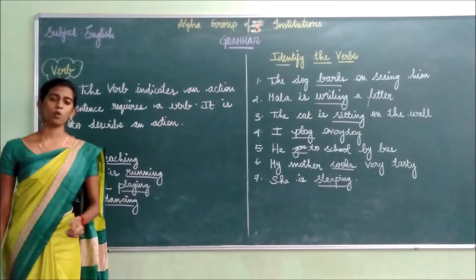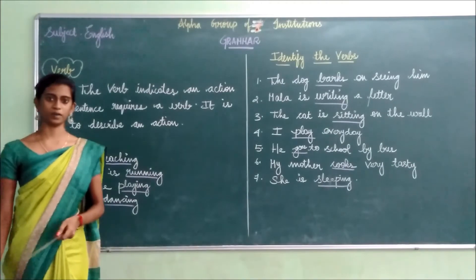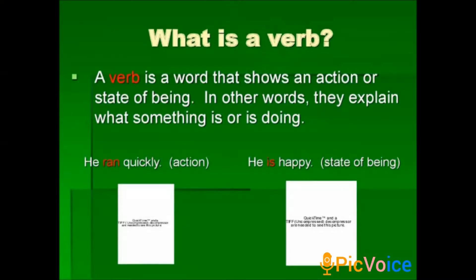Hope you all understood what is noun and what is verb. Look at this second image. What is a verb? A verb is a word that shows an action or state of being. In other words, they explain what something is or is doing. For example: He ran quickly — here ran is the action word. He is happy — this has been a state of being.